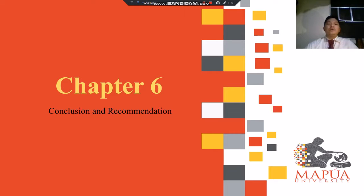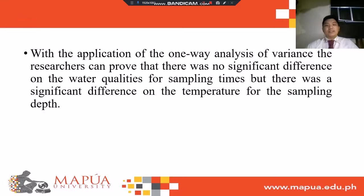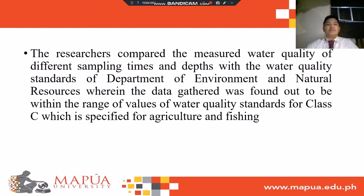Chapter 6: Conclusion and Recommendation. The researchers were able to design and fabricate a device that can measure deep water quality and relay the data gathered wirelessly via SMS. With the application of ANOVA, the researchers proved there was no significant difference in water qualities for sampling times, but there was a significant difference in temperature for sampling depth. The researchers compared the measured water quality with the DENR water quality standards, and it was found to be within the range of values for Class C, which is specified for agriculture and fishing.